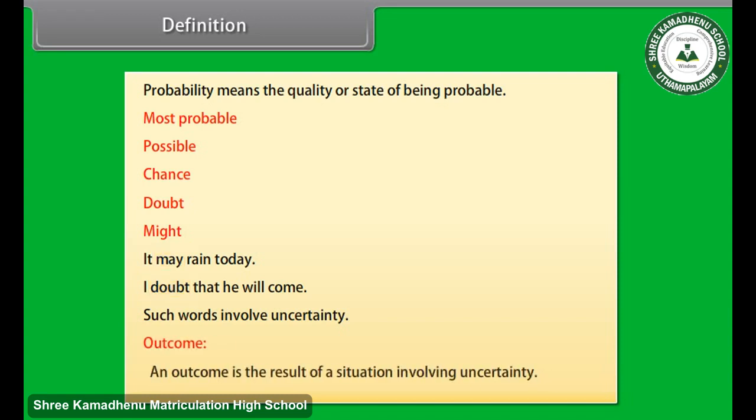Outcome. An outcome is the result of a situation involving uncertainty. Probability: An experimental approach.